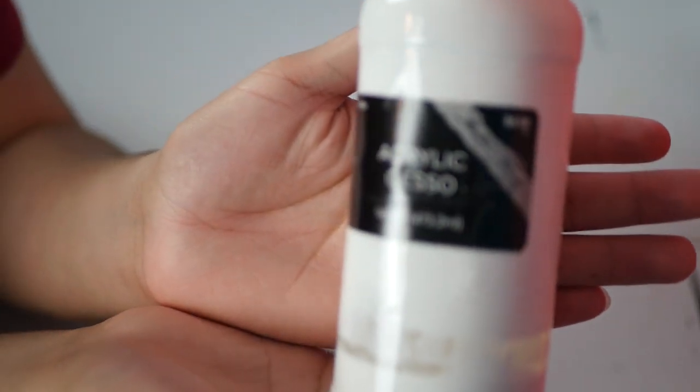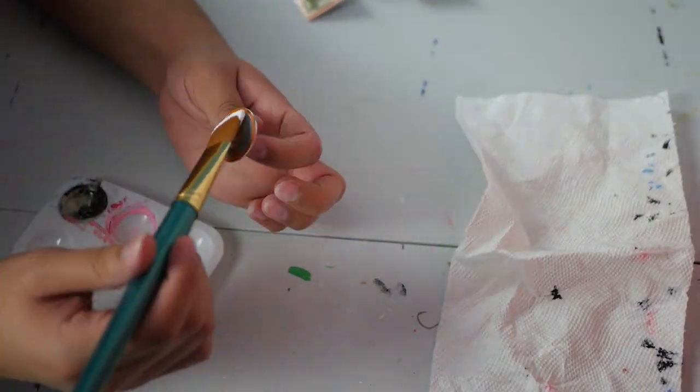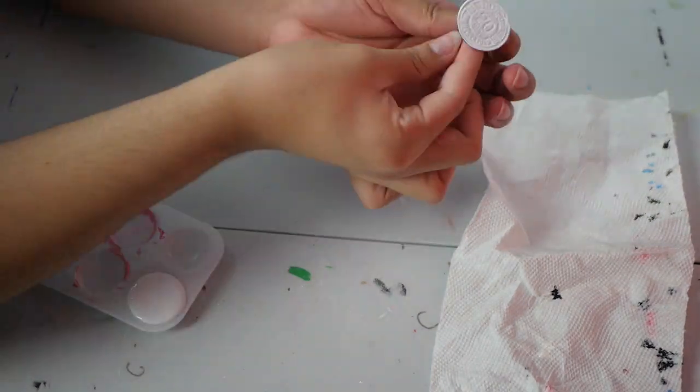And once that was done, I used some acrylic gesso just to also help the paint stick better and to give a nice white base coat to start in.